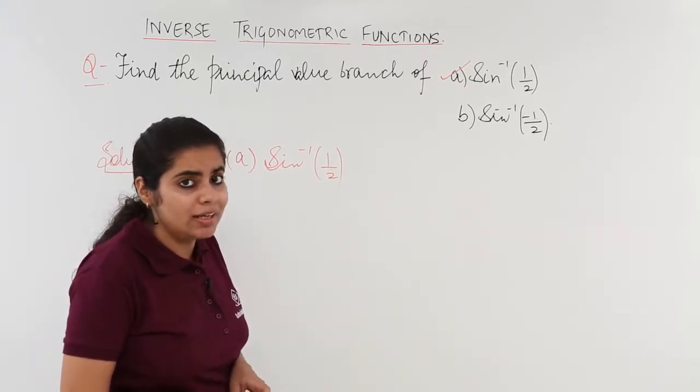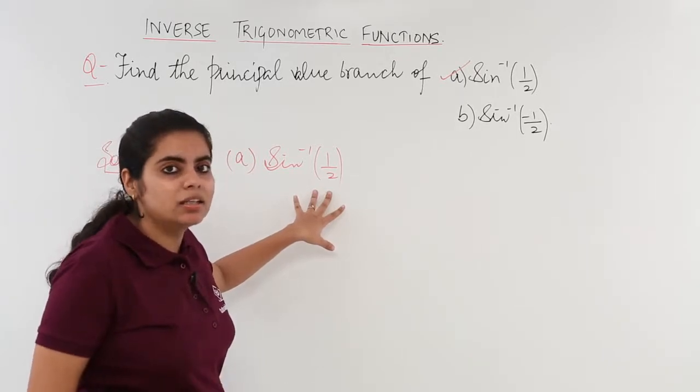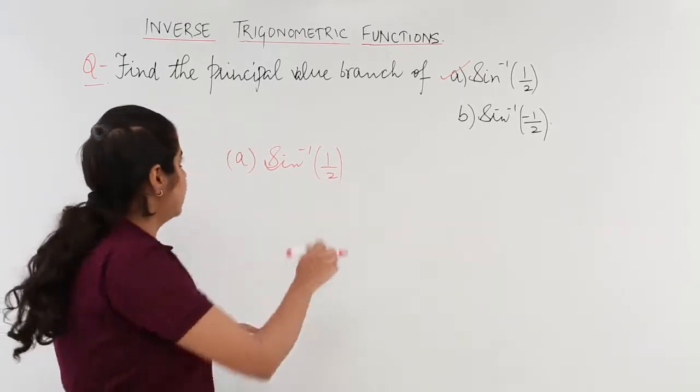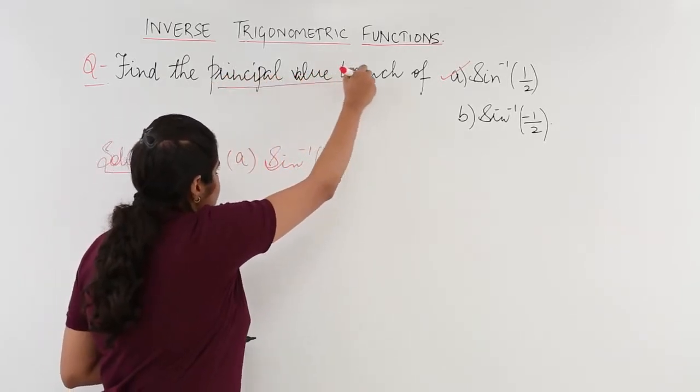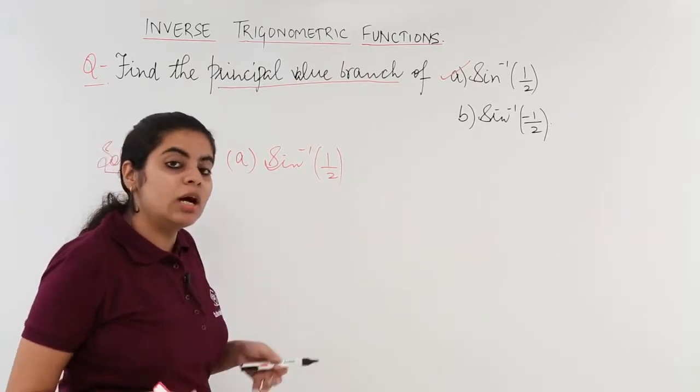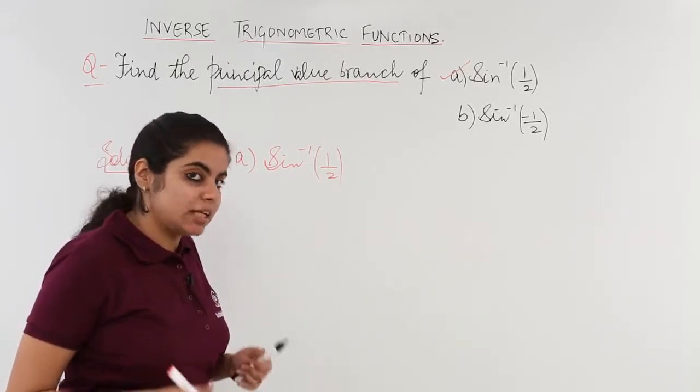I know that sine of what angle gives me 1 by 2? And that thing should be kept in mind that my angle that I am referring to should lie in the principal value branch. Now, what is the principal value branch of sine inverse x?